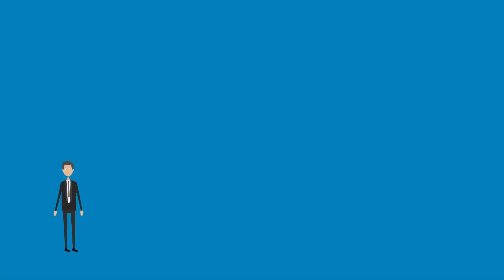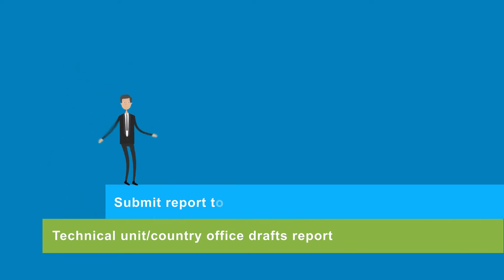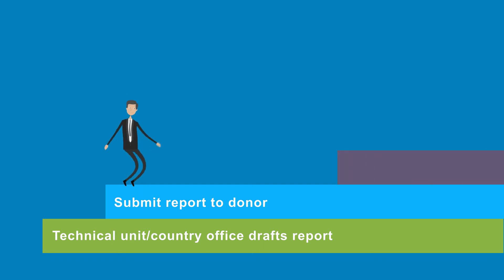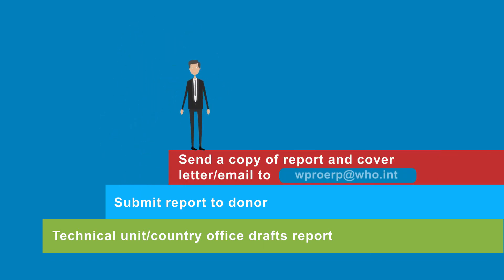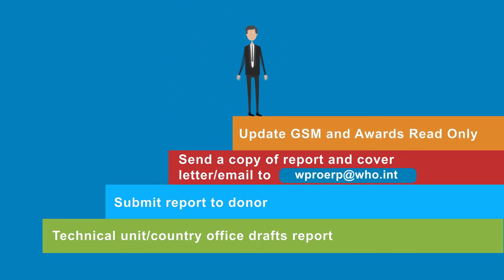The donor reporting process for submitting technical reports begins with the technical unit or country office drafting the report. Then the award manager shall transmit the technical report to the donor in accordance with the terms of the agreement. A copy of the report and the transmittal letter or email should then be sent to ERP for uploading into the ECM. Lastly, GSM is updated to reflect that the report has been submitted.